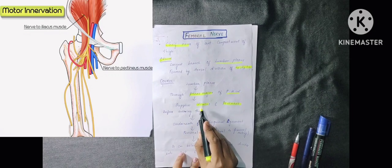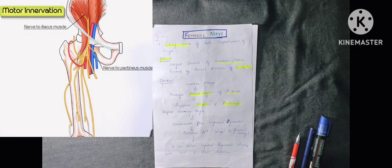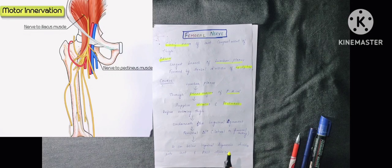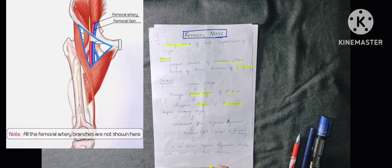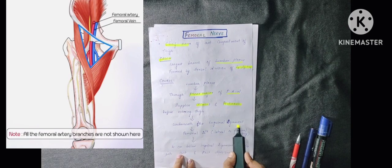This is a very important viva question and in competitive exams you can get questions about the femoral nerve supplying iliacus and pectineus before entering the thigh. It then passes underneath the inguinal ligament. The inguinal ligament is a fold of the external oblique muscle, attached from the anterior superior iliac spine to the pubic tubercle.